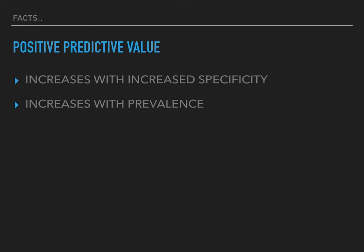A couple of things to know about each one. For positive predictive value, just know that it increases with increased specificity of the test. So the higher the specificity of a test, the greater its positive predictive value will be. The positive predictive value also increases with prevalence — if you have increased prevalence, you'll have increased positive predictive value.